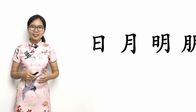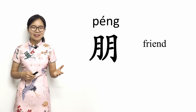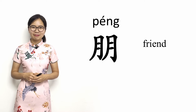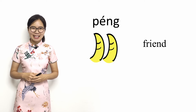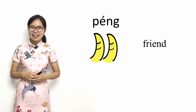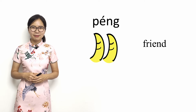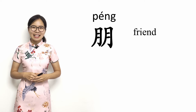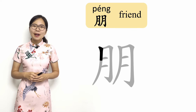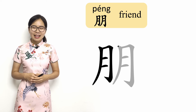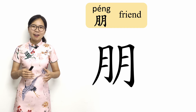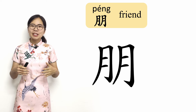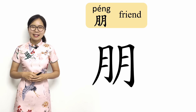Our final character in this lesson is 朋, which means friend or companion. This character is made of two 月 or moon characters side by side. These two moons are good friends, and they really enjoy each other's companionship. Writing this character is easy. First, write the 月 or moon character on the left side, then write it again on the right side. The two 月 or moon characters that make up 朋 are written more narrowly so that they fit into the space of a single character.